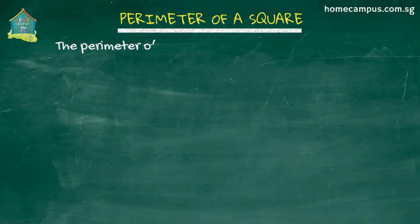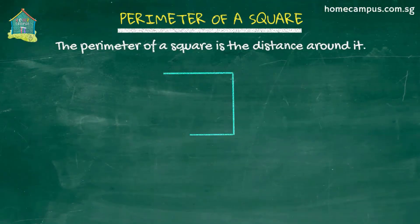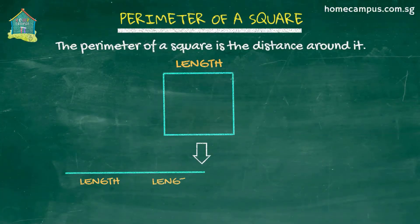The perimeter of a square is the distance around that square. We learned in a previous video that all four sides of a square are of equal length. So if we lay the sides of this square next to each other...